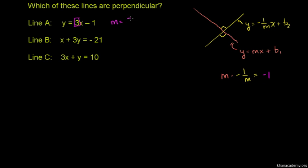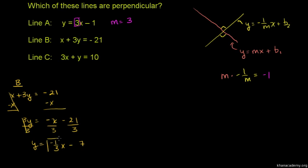So line A slope is equal to 3. Line B: x plus 3y equals minus 21. So 3y equals minus x minus 21. Dividing by 3, y equals minus 1 over 3 times x minus 7.